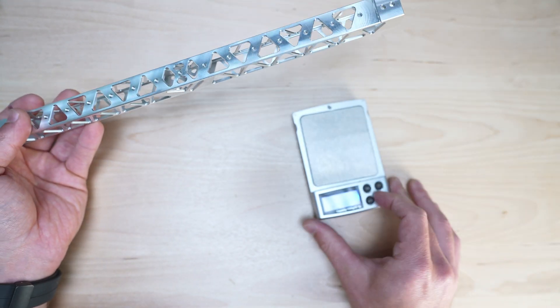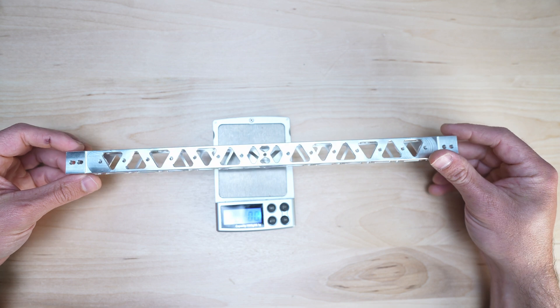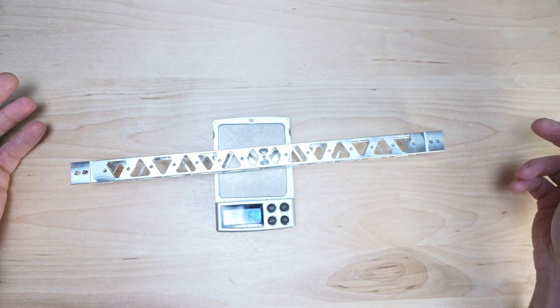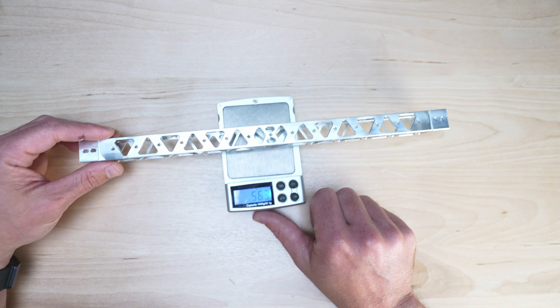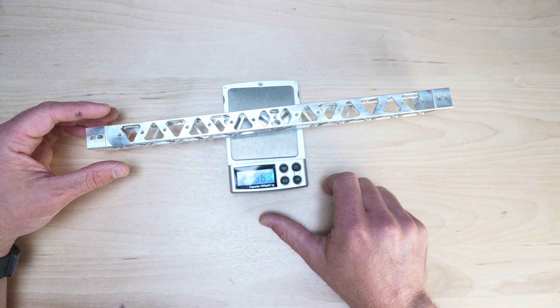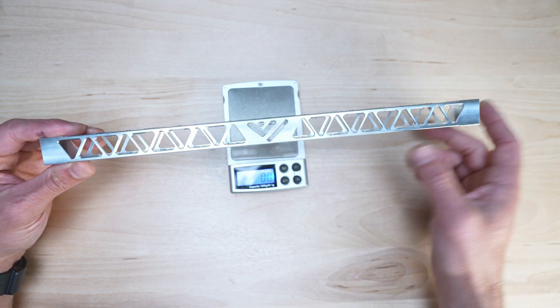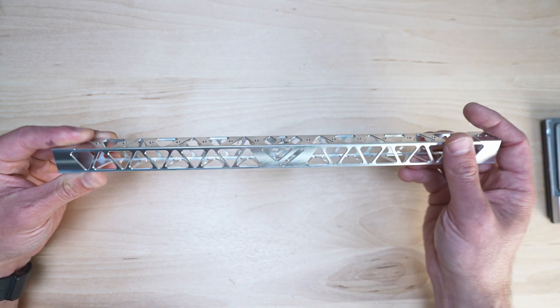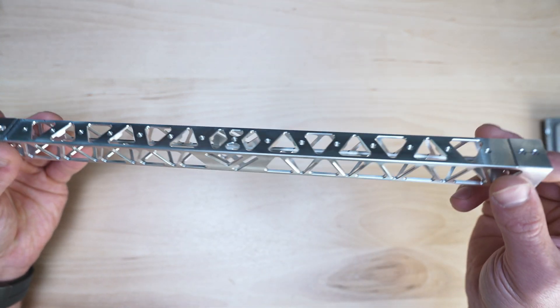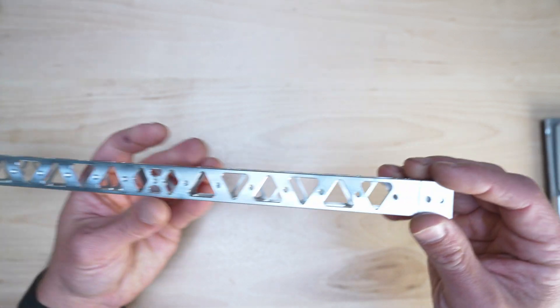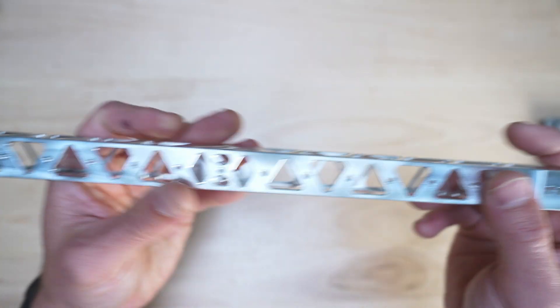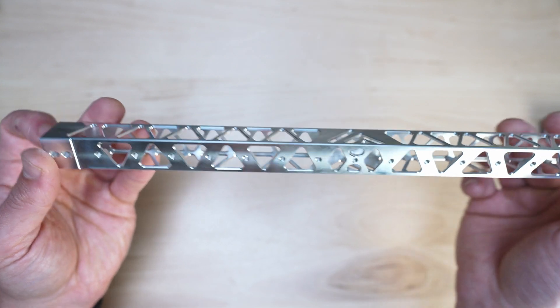It weighs—let me just test it—should be around 56 grams according to my CAD, and it's 56.3 grams. On the 235, the 330 is going to be around 70 grams. But you don't have to add any nuts inside because it already has threaded holes, one for each hole on the rail.